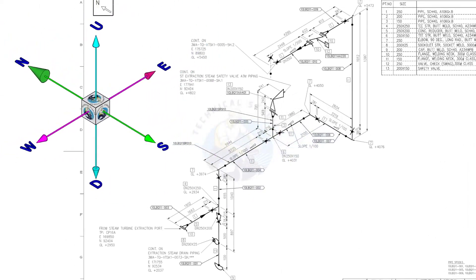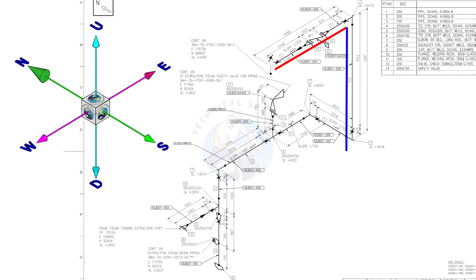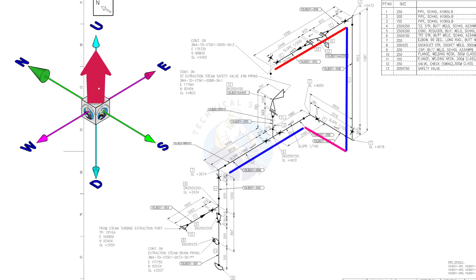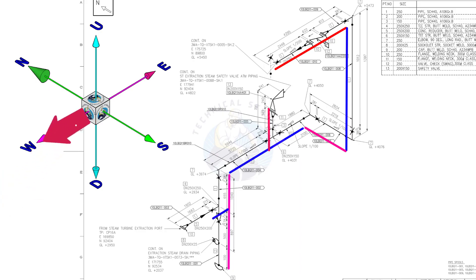Let's take a look at the piping's directions. Suppose this is where the pipe begins. The pipe goes to the east, then turns down 90 degrees, goes to the north 90 degrees, then turns 90 degrees to the west. From the T, the pipe goes up. From here, the pipe turns 90 degrees downwards. From the T, the branch goes to the west. The sockolet branch connection is to the north direction.